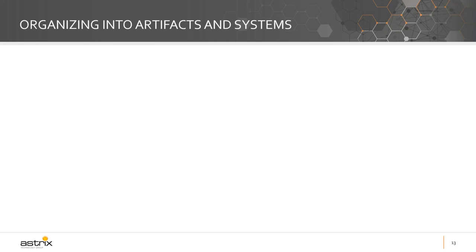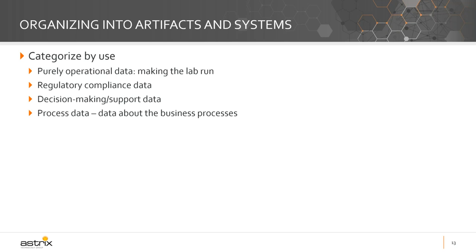Step two — now we have a bunch of raw data. We have a whole bunch of commentary and process flow kind of diagrams around material, samples, and data flow in the labs across different teams. Depending on the scope of the assessment, it may be across different teams or just a single part of the organization. Now we're going to try to organize that information into artifacts and systems. Materials and samples are pretty straightforward — they in themselves are artifacts. But the data itself, we want to characterize into artifacts and eventually into systems.